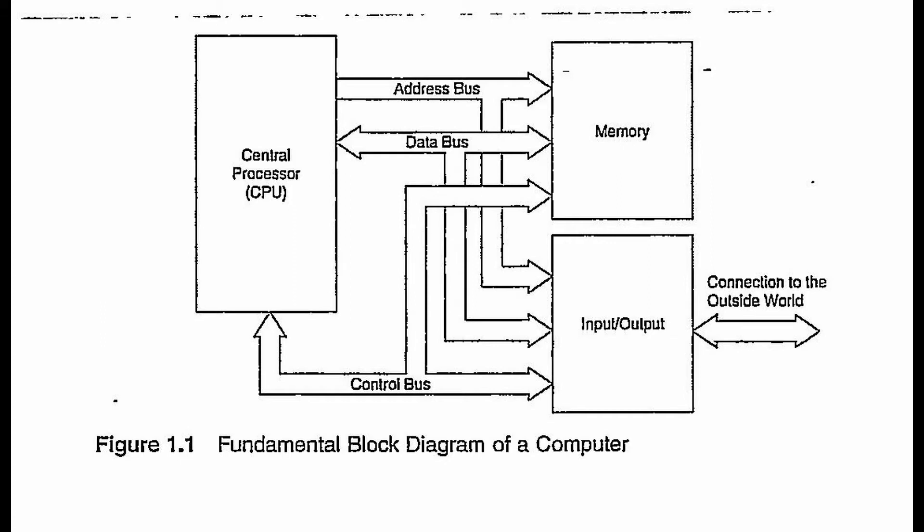The address bus has an arrow that points in one direction which means it can only communicate in one direction. The data bus has two arrowheads which means it's bi-directional and it can communicate in both directions. The control bus is actually more complex. Sometimes it can go in both directions but sometimes only one direction.